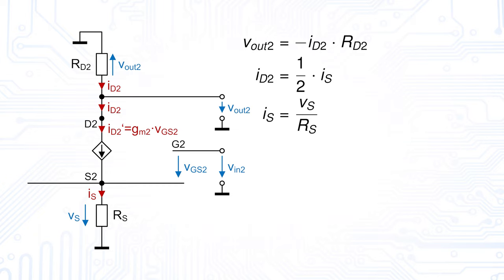But why can we even assume that our small signal common mode input voltage drops across RS? To answer this, we have to look at the small signal voltage changes of our MOSFET when IS changes. More precisely, we look at the small signal changes of the voltages Vgs and VS. In order to confirm our assumption that our small signal common mode input voltage is equal to the voltage drop across RS, the small signal voltage change of VS would have to be much larger than the small signal voltage change of Vgs with respect to IS. If this is the case, we can neglect the latter. If we now insert values from a typical MOSFET into the two formulas to check our assumption, we can see that this is indeed the case. Therefore, we can confirm our assumption and the formula for the common mode gain from before is valid.